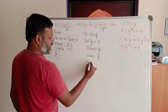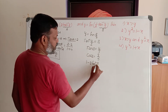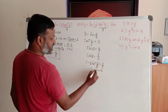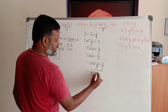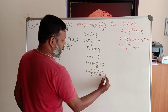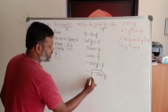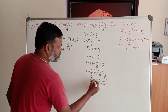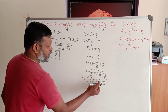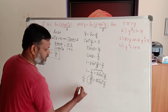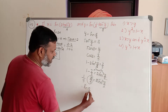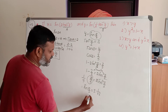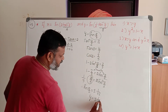Cos b can be written as 1 minus 2 sin square b by 2, and that equals 3 by 5. Rearranging: 1 minus 3 by 5 equals 2 sin square b by 2. This becomes 2 by 5 equals 2 sin square b by 2. The 2s cancel, giving sin square b by 2 equals 1 by 5. Taking the square root, sin b by 2 equals plus or minus 1 by root 5. Since sin b by 2 is y, therefore y equals plus or minus 1 by root 5.